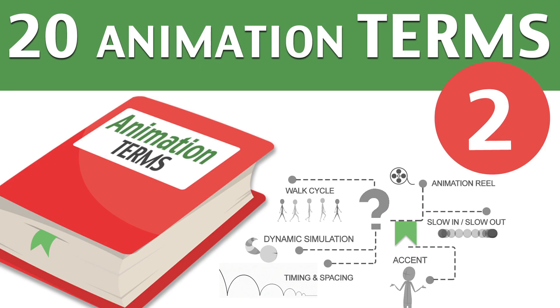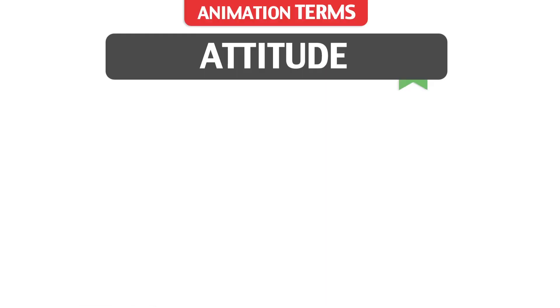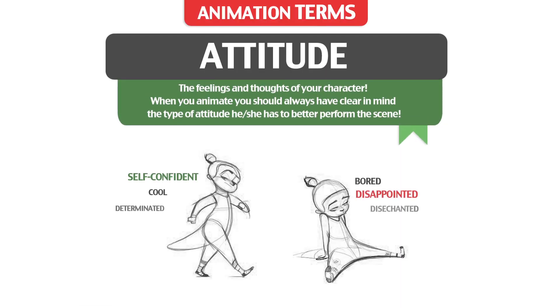Welcome to the second group of 20 common animation terms. Let's start this list with Attitude — the feelings and thoughts of your character. When you animate, you should always have clear in mind the type of attitude he or she has, to better perform the scene.